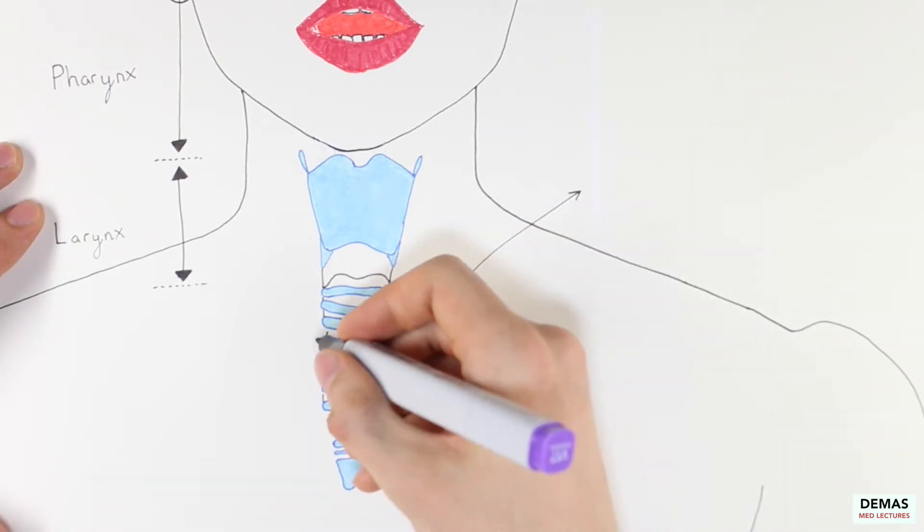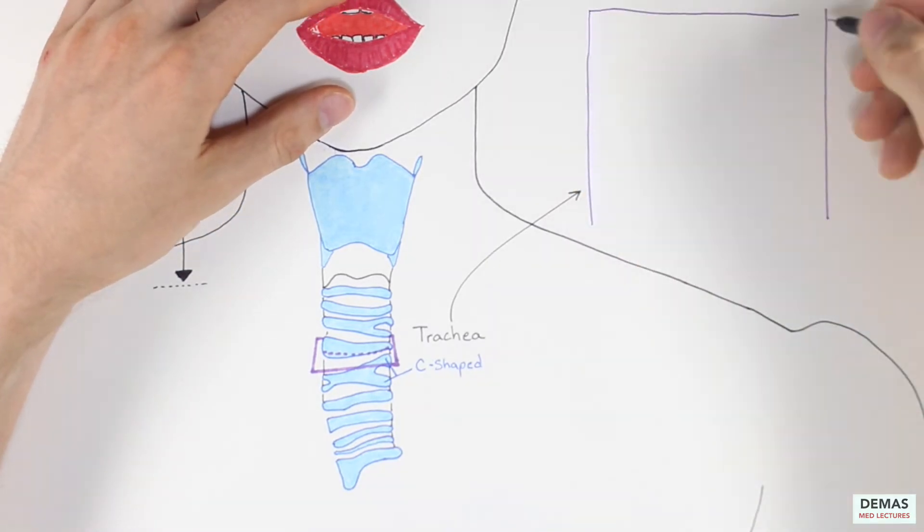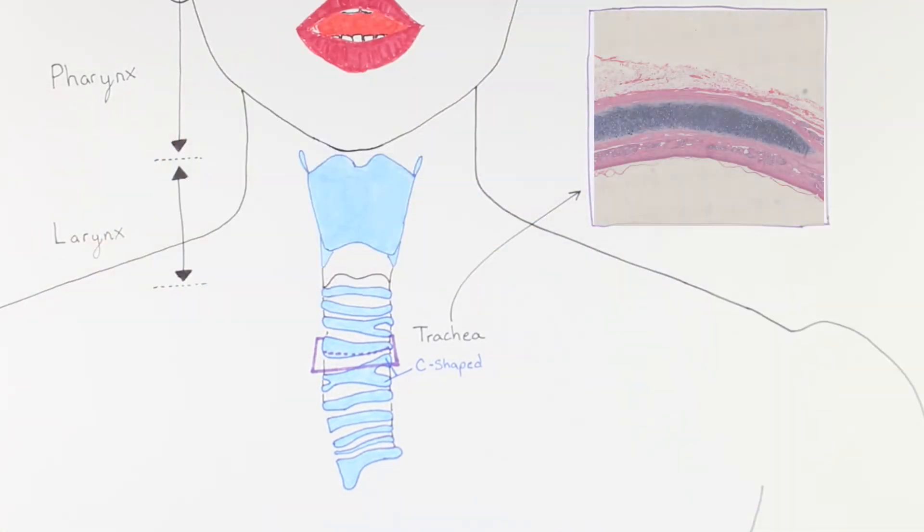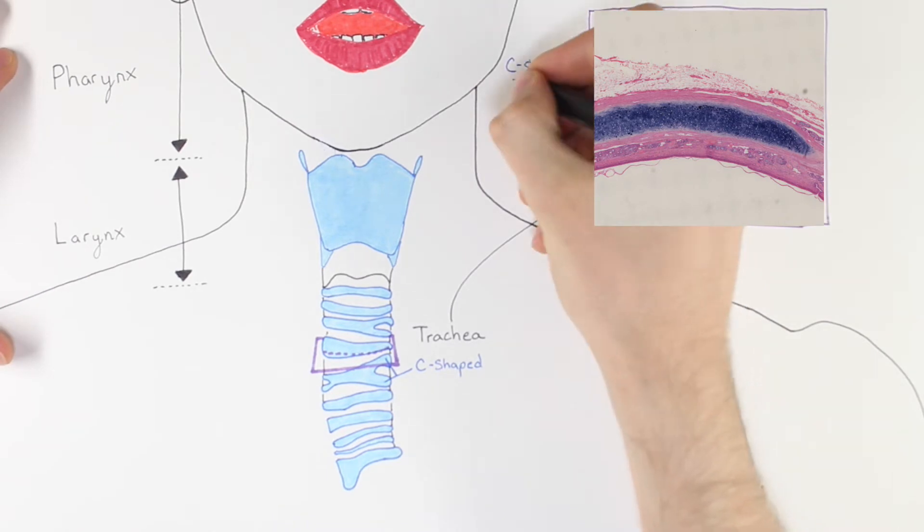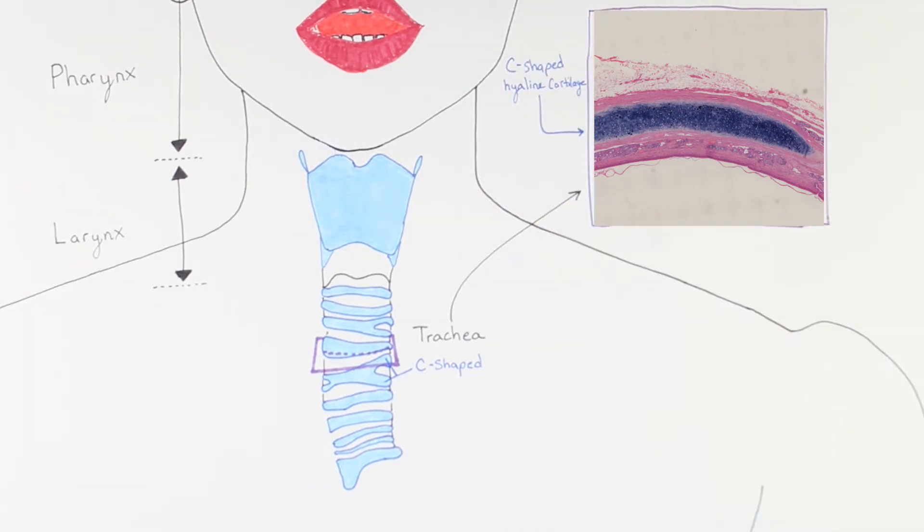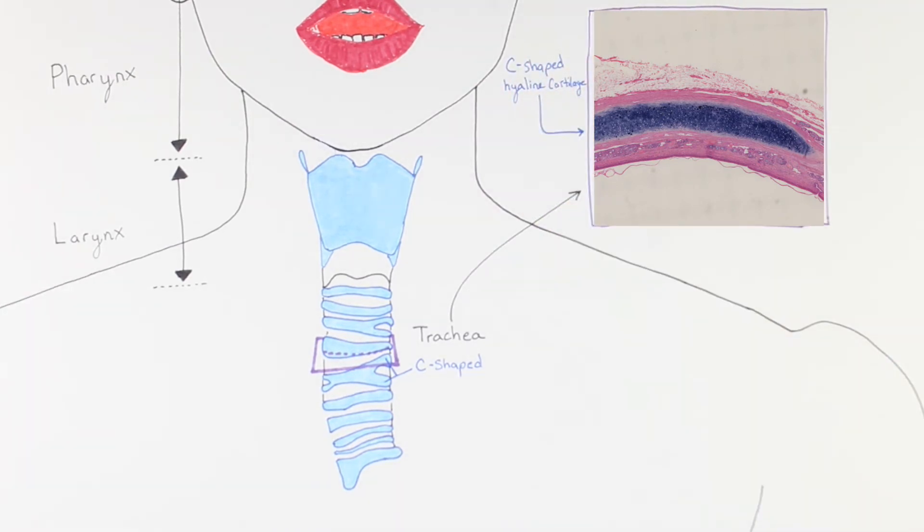Let's take a look at an H&E stained slide of the trachea underneath the microscope. This slide shows a horizontal slice of the trachea and captures part of the incomplete ring of hyaline cartilage shown in blue.